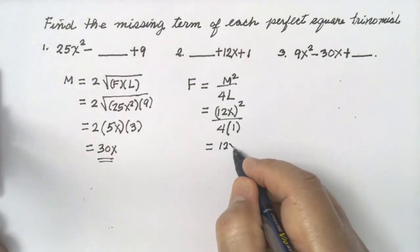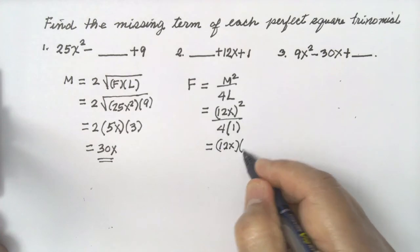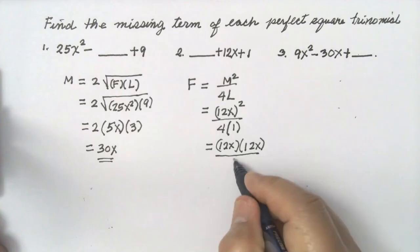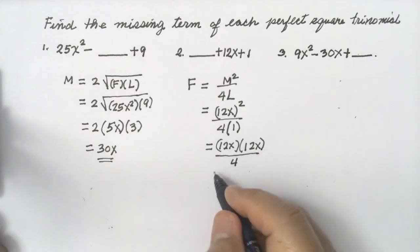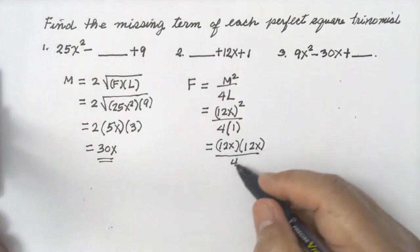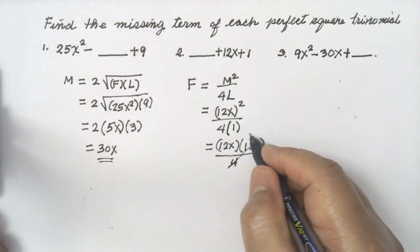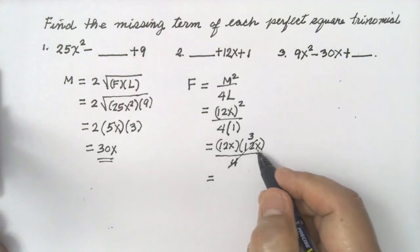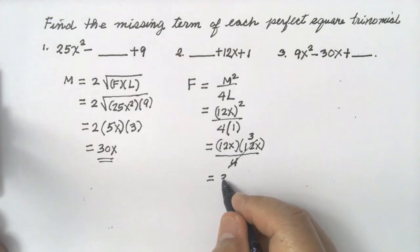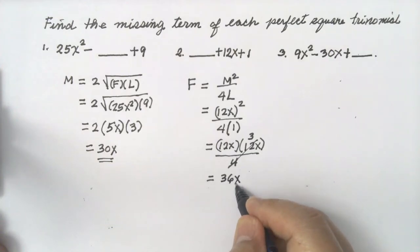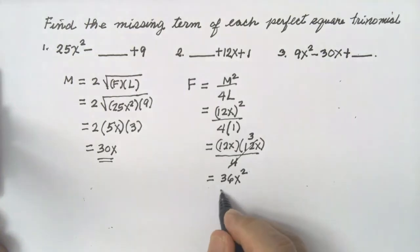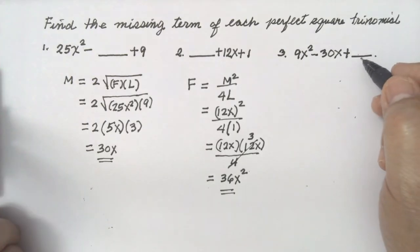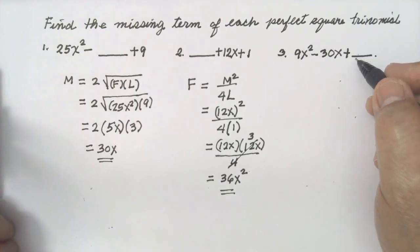(12x)² can be written as 12x times 12x, over 4 times 1, which is 4. We can cancel: 4 divided by 4 gives 1, leaving 12x times 3x. Multiplying: 12x times 3x equals 36x². So 36x² is the missing first term.